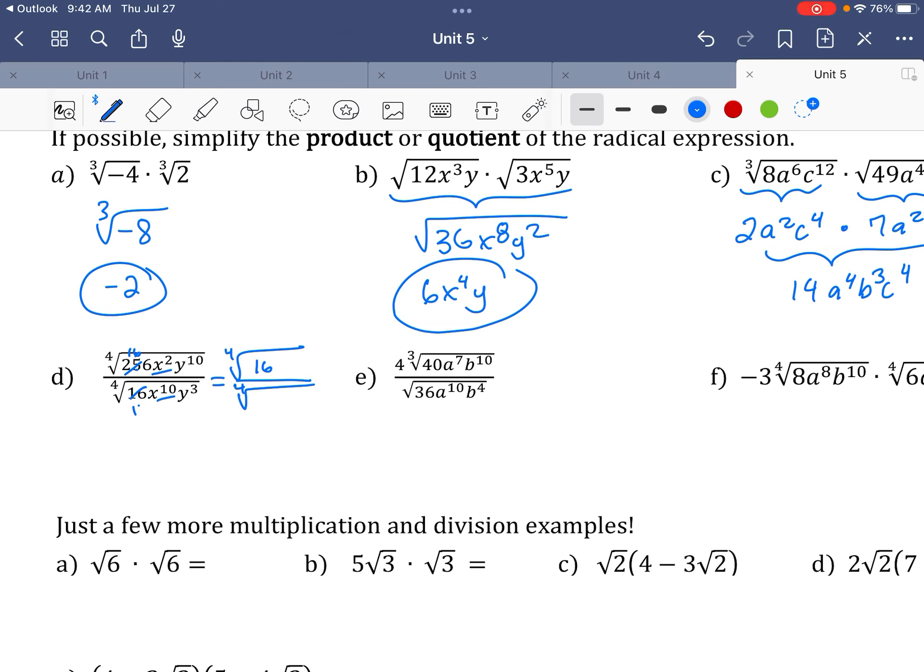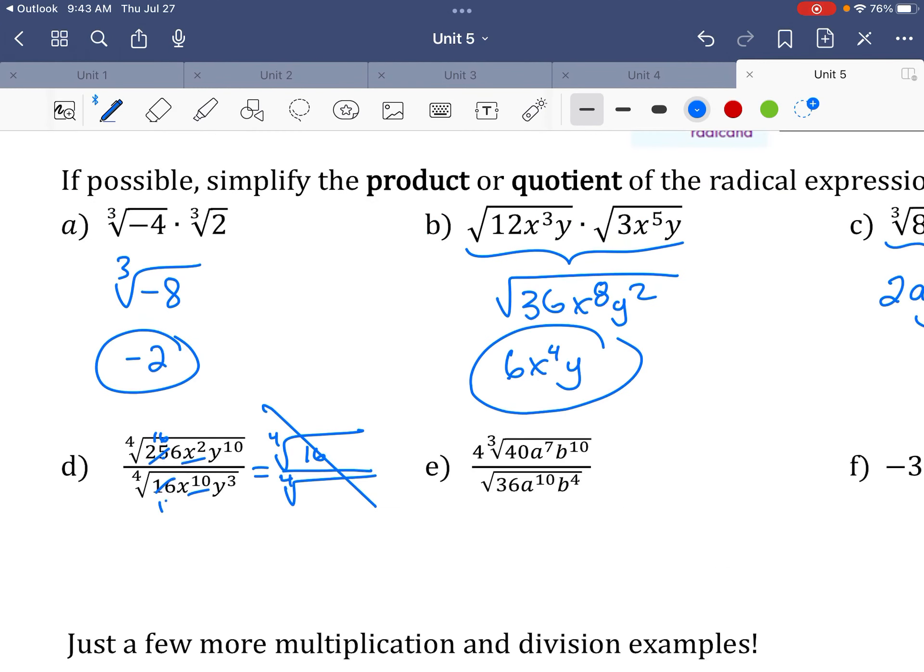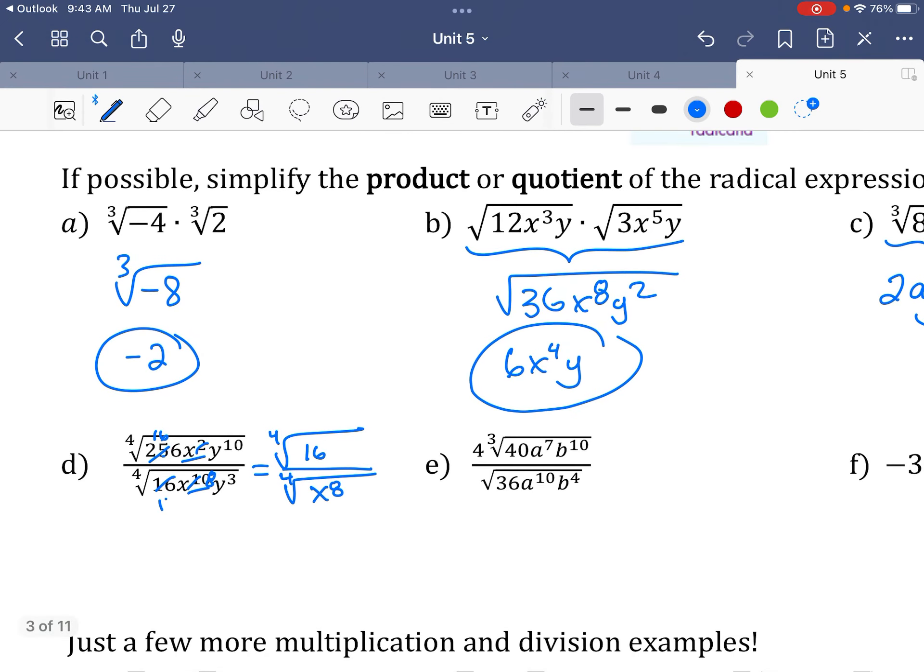All right, look here. So x2 and x10. When you divide, you subtract your exponents. So 2 minus 10 is negative 8. So that tells me I have 8 x to the 8th on the denominator. Oh, what happened here? So I have x to the 8th, all right? So basically, two of these cancels out with two of those, leaving you 8, right? And then here, y10 and y3, I subtract, I get y to the 7th.